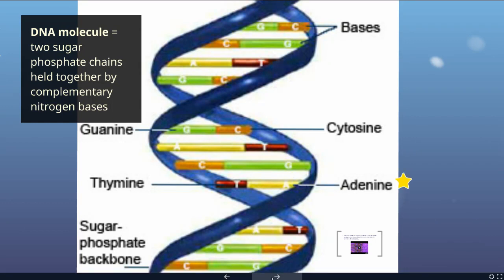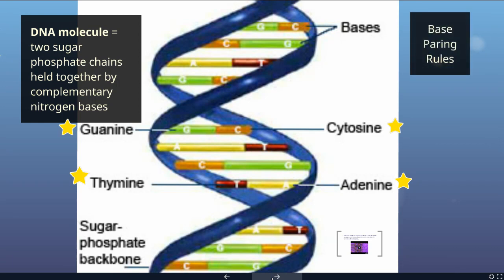The two sides of the double helix are held together by complementary base pairs. We have four nitrogen bases: adenine, guanine, cytosine, and thymine. There are base pairing rules you just memorize: guanine always binds with cytosine, and adenine always binds with thymine.